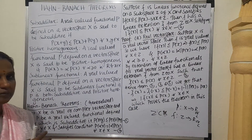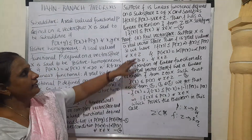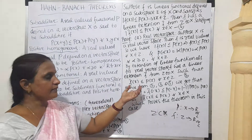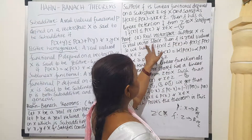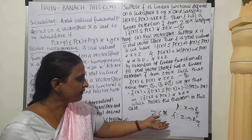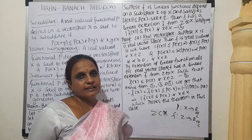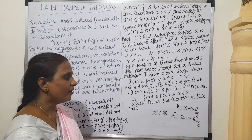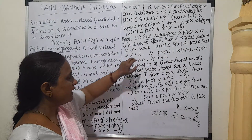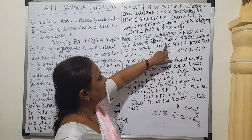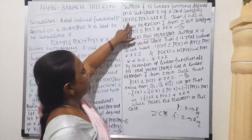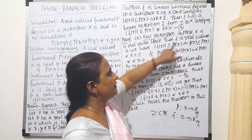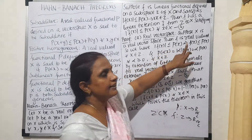To prove this, we come across two conditions: the vector space may be real or complex. If X is a real vector space, then F is a linear functional defined on a subspace of X. When X is real, its subspace is also real, and F will be a real-valued functional. Now we have |F(x)| ≤ P(x). Since F is real-valued, we use F(x) ≤ P(x) instead of the absolute value form.